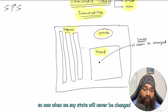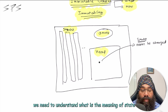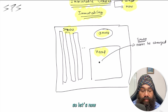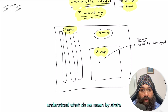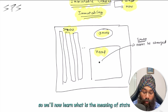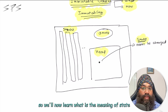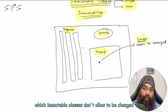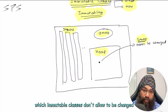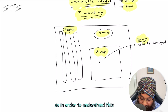So now when we say state will never be changed, we need to understand what is the meaning of state. Let's now understand what we mean by state, which immutable classes don't allow to be changed. In order to understand this, let's take an example of a student class.